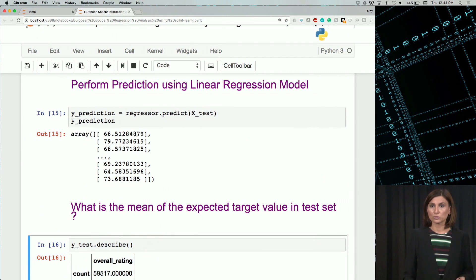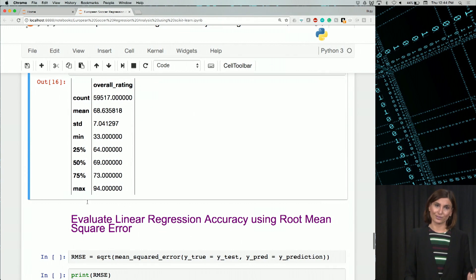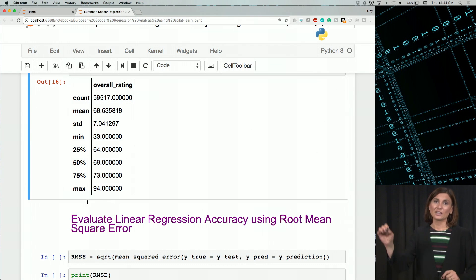We can also try to describe y_prediction and compare them, but we'll do something different. We use root mean square error to measure the prediction accuracy of our regressor. That's the RMSE, root mean square error in short.